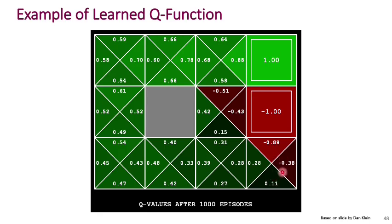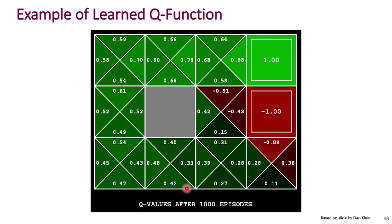Starting from another position, you follow the action with the highest Q value, reach the next square, follow that action, and so on — noting that stochastic transitions mean outcomes aren't deterministic, but you follow the same route. This is an actual example of a learned Q function after 1000 iterations, learned without having access to the true transition probability or the true reward function — just based on samples, as we saw in the previous discussion.